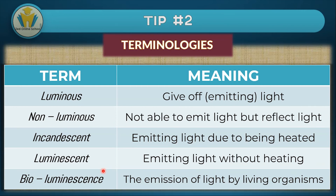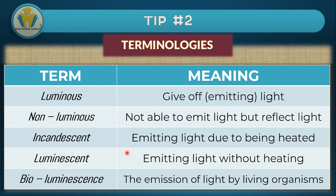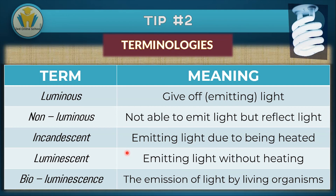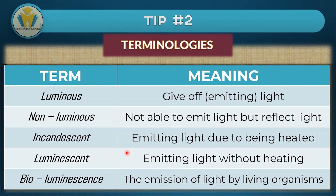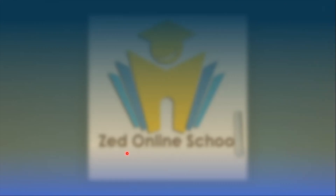We also have the words incandescent, luminescent, and bioluminescence. Incandescent means emitting light due to being heated — for example, a bulb with a filament is incandescent because heating the filament produces light. A luminescent source of light can be a fluorescent tube — it won't involve heating but rather electrons traveling through it. Finally, bioluminescence is the emission of light by living organisms. The most common example is fireflies, which in certain times of the year visibly produce light — that is scientifically called bioluminescence.